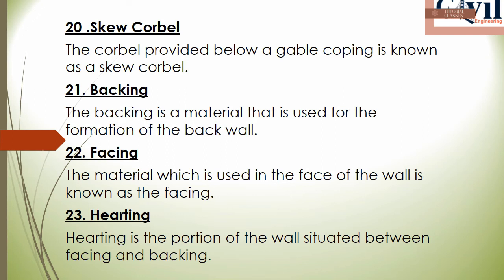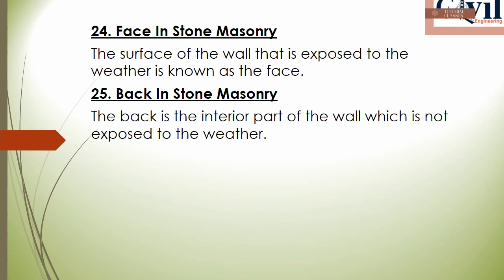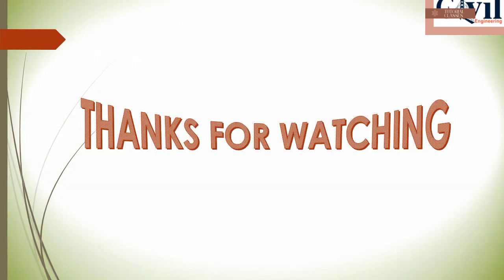The next technical term is backing. In the case of masonry walls, the portion between the back wall and face wall is called backing. The exterior surface of the masonry is called the face, and the interior side exposed to the atmosphere is called the back.